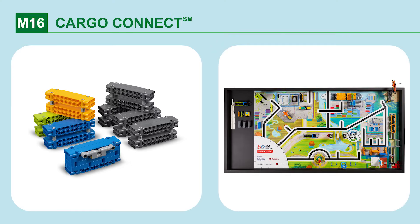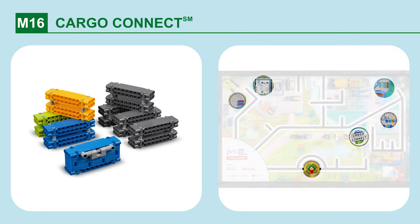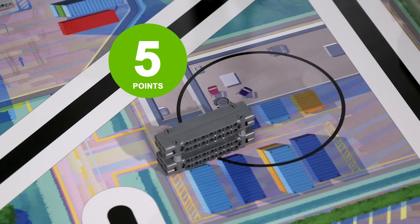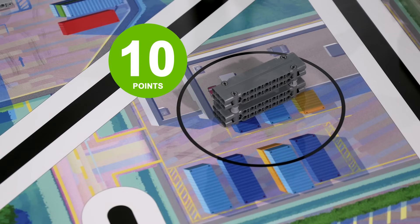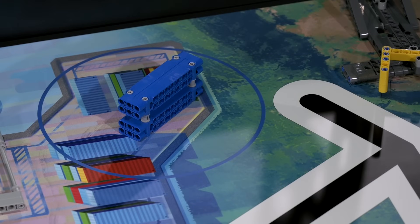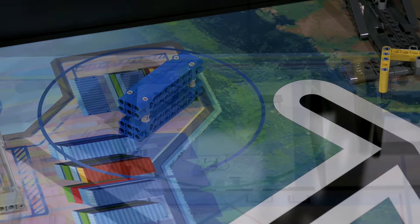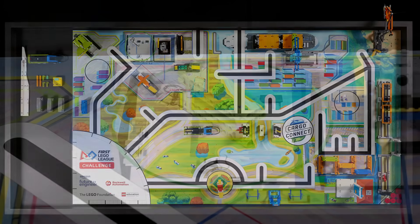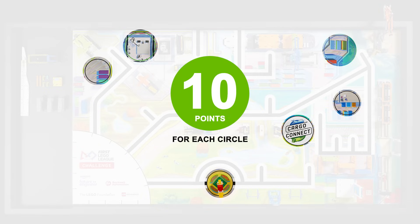Mission 16. Cargo connect. Deliver cargo containers to the circles. If there are any containers partly in any circle. If there are containers completely in any circle. If the blue, not hinged, container is completely in the blue circle. If the lime green container is completely in the green circle. If there are containers in any circle.